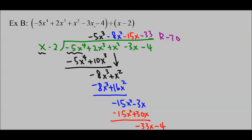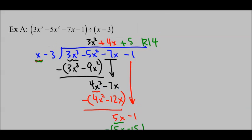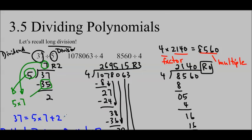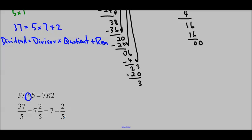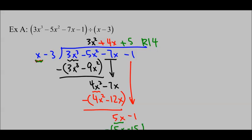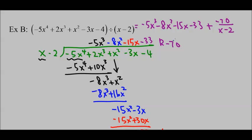So we could write our answer like this: negative 5x cubed minus 8x squared minus 15x minus 33, remainder negative 70. Or another way is: negative 5x cubed minus 8x squared minus 15x minus 33 plus negative 70 over (x minus 2). Just like we did before — we're writing it in a mixed number format.